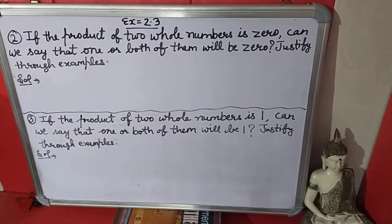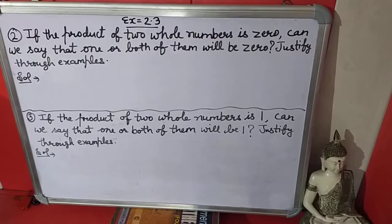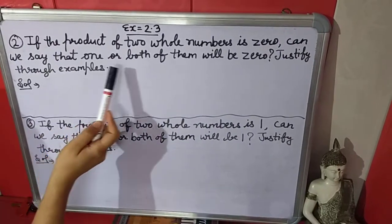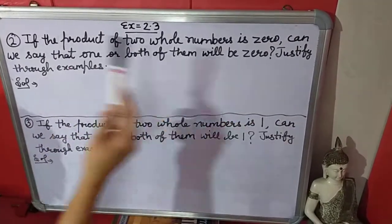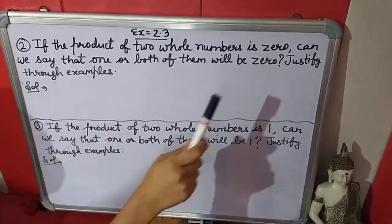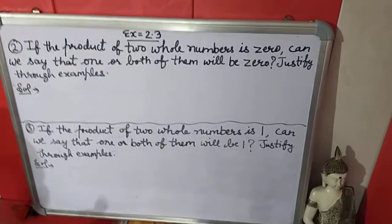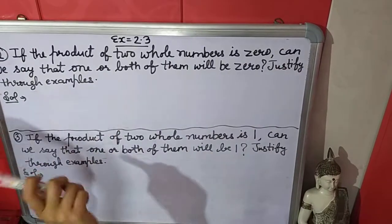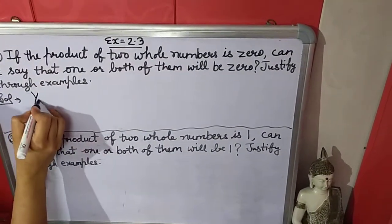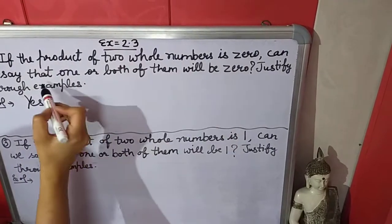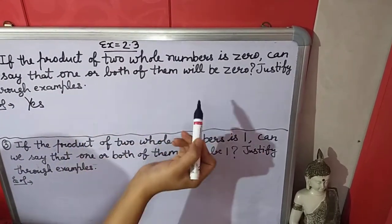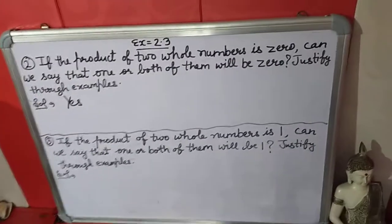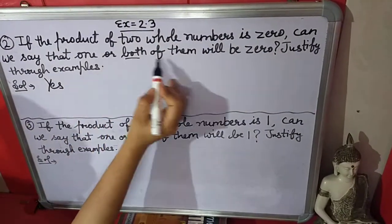Good morning students. Now we will move on to the second question of exercise 2.3. The question is: if the product of two whole numbers is zero, can we say that one or both of them will be zero? Justify through examples. Yes, the answer is yes. If the product of two whole numbers is zero, one or both of them will be zero.